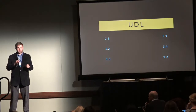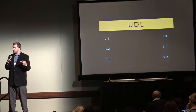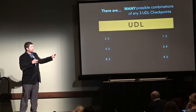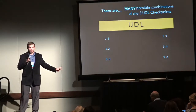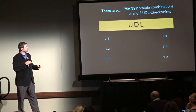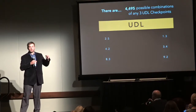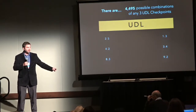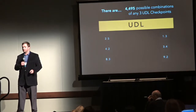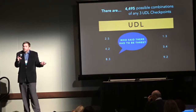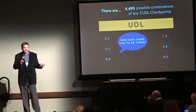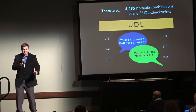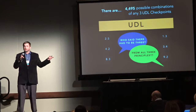It becomes difficult to understand how I can use these two separate cases to say, yes, UDL is working. There are many possible combinations of the UDL checkpoints. If you do a permutation calculation, there are actually 4,495 different ways that any three of those 31 checkpoints could be combined in the practice of Universal Design for Learning. And who said there had to be three? Do they have to come from all three principles? Or in this lesson is it really just representation that needs to be addressed? We're still talking about that.